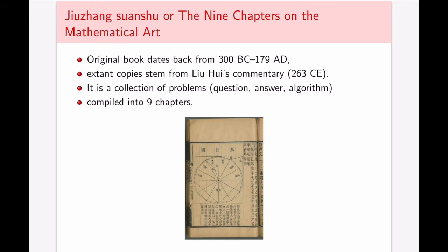The most extensive book of ancient Chinese mathematics that we have is so-called nine chapters on the mathematical art. The original book dates to approximately minus 300 to 179 AD, but the actual existing copies all stem from Liu Hui's commentary at around year 263. It is again a collection of question-answer algorithm problems, but this time around this idea of distinguishing categories is taken further because the book, as the name suggests, is compiled into nine quite distinct chapters.